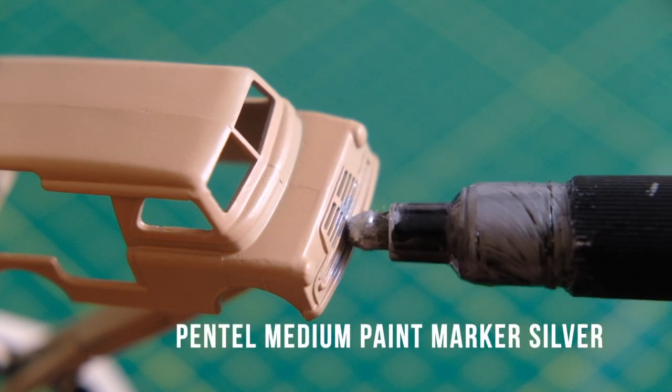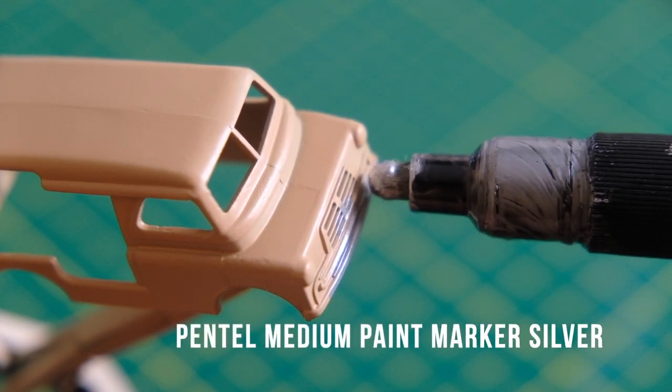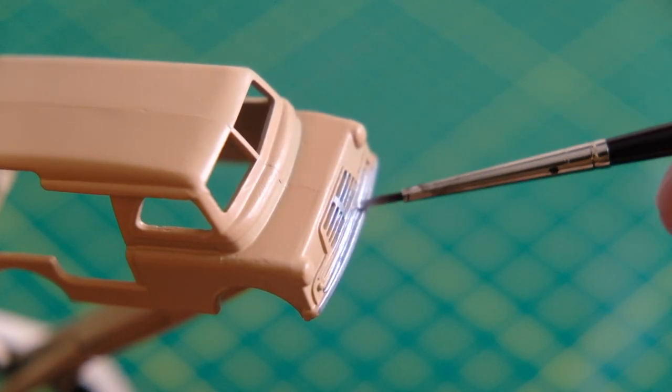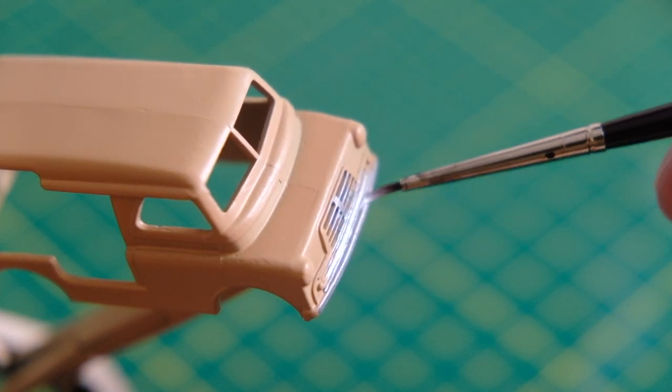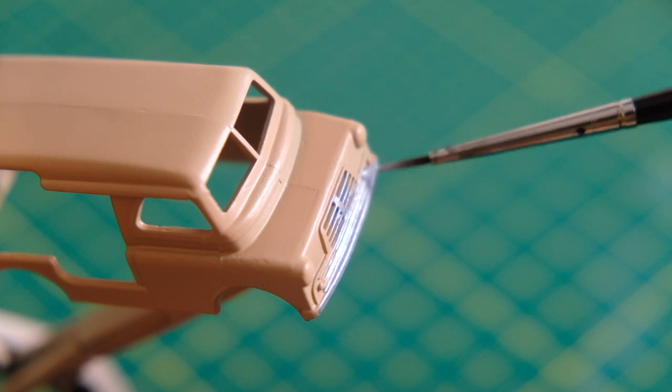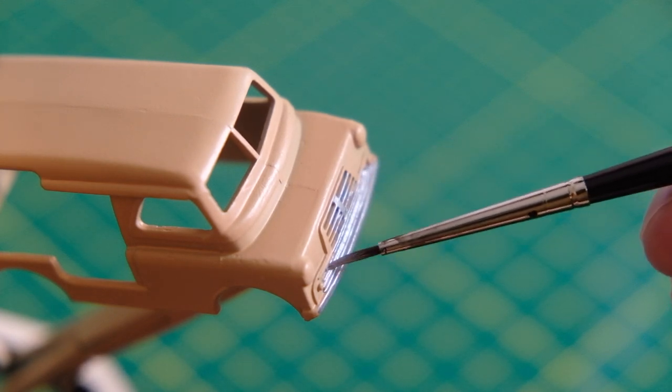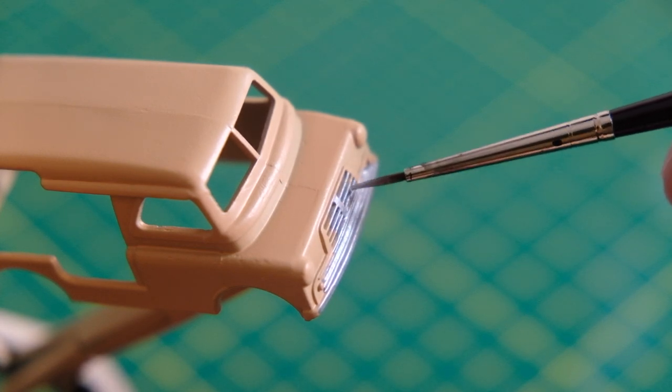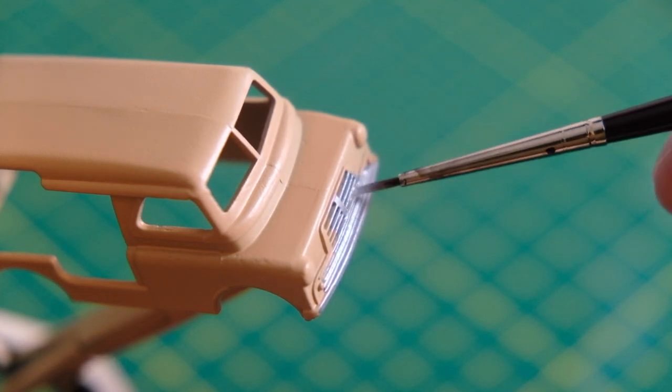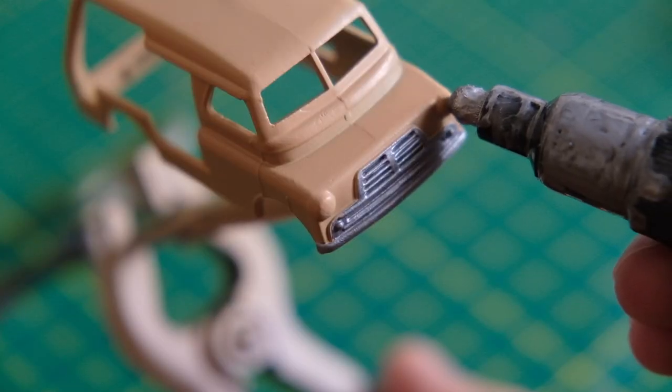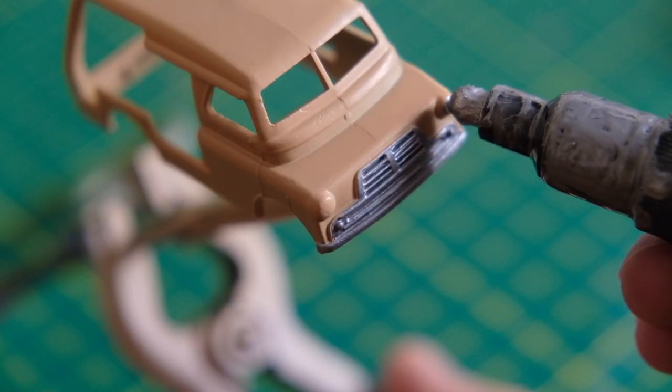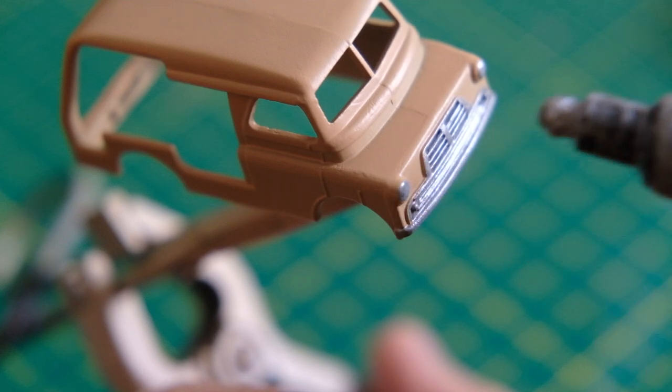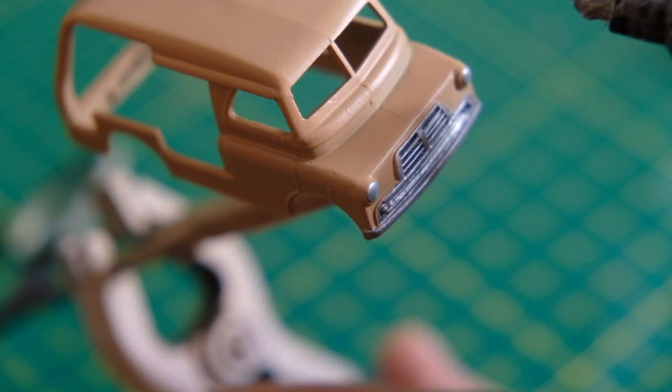Instead of my usual Molotow chrome I opt to utilise the Pentel silver paint marker on the grille. It's not quite as bold and brash as the Molotow. I think it sits better on the earlier models but it can be debatable on some castings whether the chrome or silver suits best. This pen leaks a fair bit so I spread the excess around with a fine brush. I cautiously apply the paint to the headlights directly from the pen here.